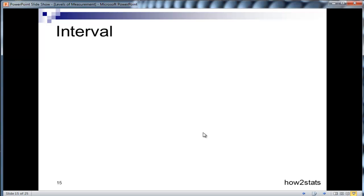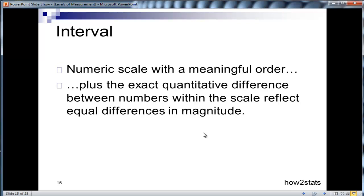So interval. This is the next level of information associated with the level of measurement. And it's a numerical scale with a meaningful order. Plus the exact quantitative difference between numbers within the scale reflect equal differences in magnitude. This is the core difference between ordinal and interval. Now that we're in the interval scale, we actually can interpret the difference between values on a scale as equal across the continuum of that scale.